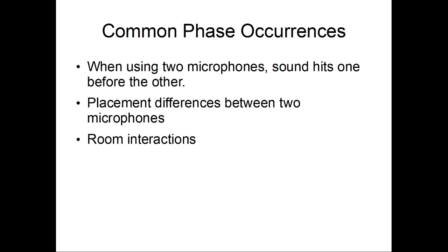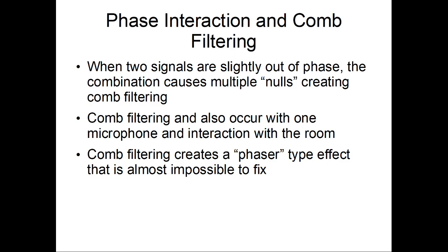You can also get room interaction cancellations if you're recording in a small room, or with comb filtering. What actually happens is you're getting complex cancellations across the frequency range that are constantly shifting because complex waveforms are coming out, giving you multiple nulls. This creates a comb filtering effect. The sound of comb filtering is kind of like a phaser effect — if you're a guitar player or DJ, you're probably familiar with the sound. It's not a good sound, and it's practically impossible to fix.